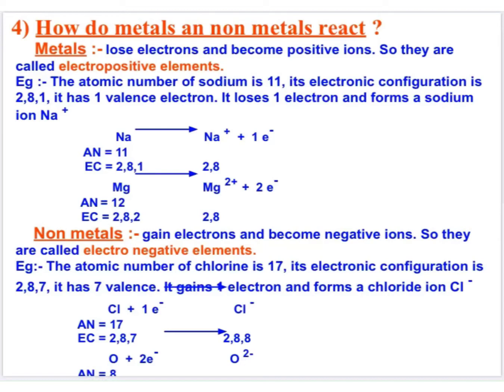Another example of a metal is magnesium and the formation of magnesium ion. Next is non-metals. Non-metals are the elements which have five, six, or seven electrons in their outermost orbit. In order to acquire octet configuration they will gain electrons and form negative ions, so they are known as electronegative elements. For example, chlorine has atomic number 17 and electronic configuration 2,8,7. It gains one electron and forms the chloride ion Cl⁻ with electronic configuration 2,8,8. Another example of a non-metal is the oxide ion O²⁻.